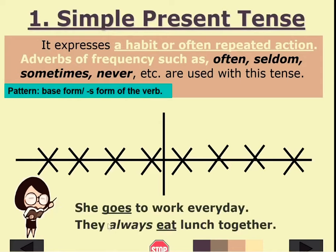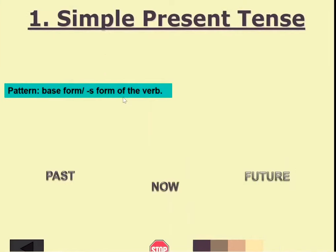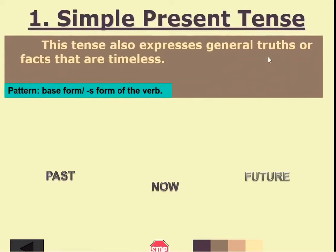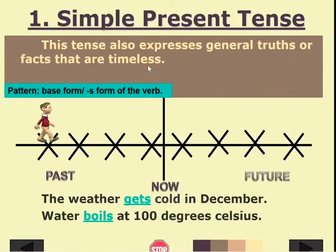The pattern for simple present tense uses the base form or the S-form of the verb, depending on the subject. Simple present tense also expresses general truths or facts that are timeless. For example: 'The weather gets cold in December' — this states a timeless fact. 'Water boils at 100 degrees Celsius' — this is also a general truth.